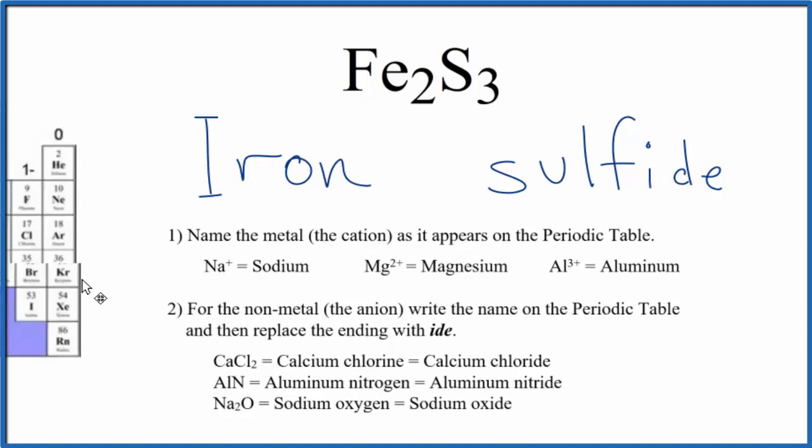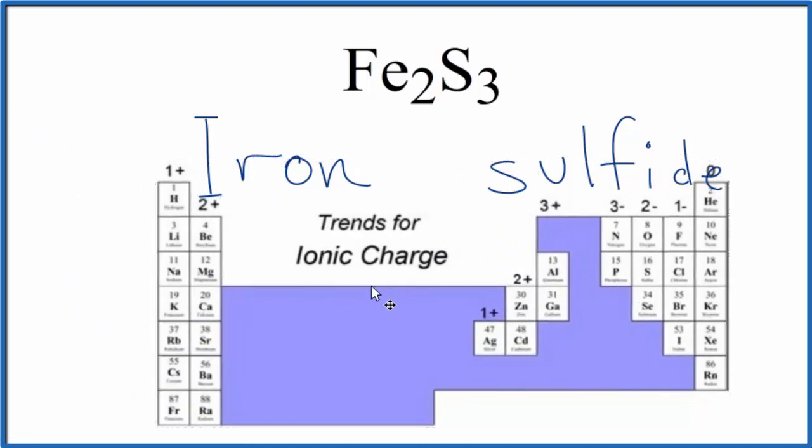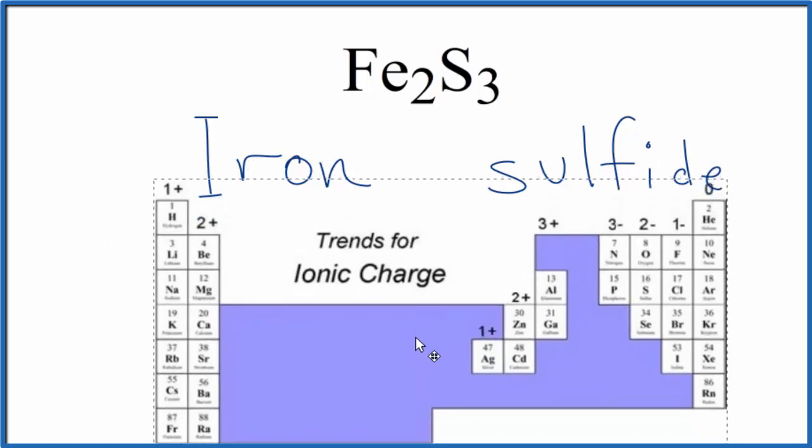So if we look at the periodic table here, iron's right about here on the periodic table. It's a transition metal. Because of that, we don't really know the charge on the iron here. We have to look at what it's bonded to.